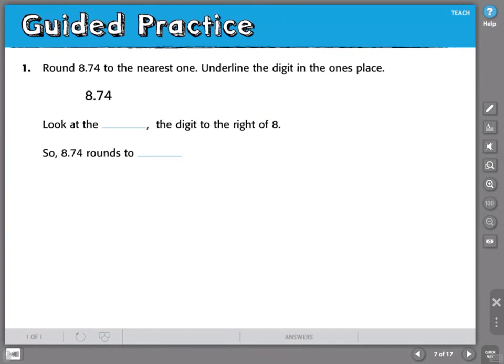Here is an example for you to try on your own. You're going to round 8.74 to the nearest one. They give you some clues here and I look forward to seeing what you come up with in class.